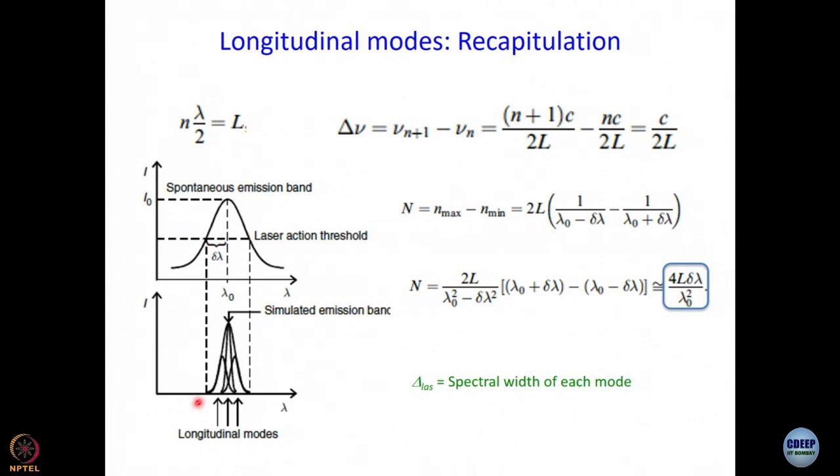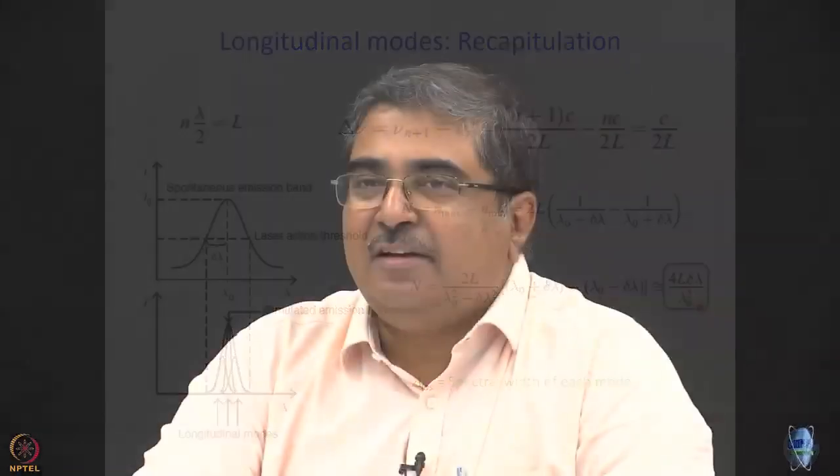We asked that if this is a spectrum of a stimulated emission, how many longitudinal modes are there? And the answer was capital N equal to approximately 4L delta lambda divided by lambda 0 square. What is lambda 0? Lambda 0 is the wavelength where the spectral maximum occurs. And what is delta lambda? Half width at half maximum of spontaneous emission.